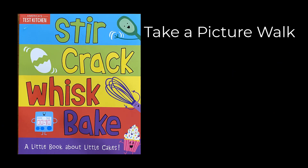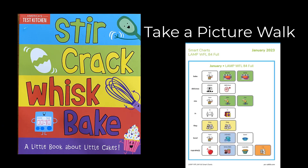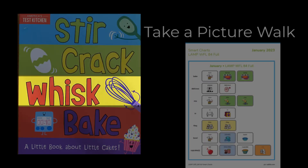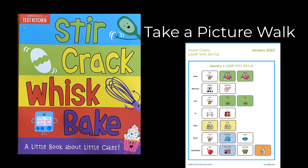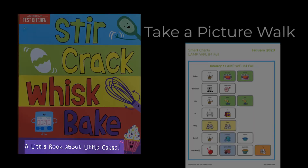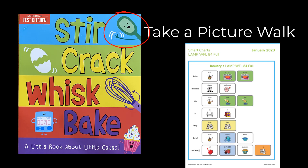You can begin reading by taking a picture walk. This is a great way to build background knowledge and get ready for reading the story. Begin by reading the title. This book is called Stir, Crack, Whisk, Bake — a little book about little cakes. I see a spoon. What do you see? I see a spoon, an egg, a whisk for stirring, a timer, and a cupcake. I think this book is going to be about baking cupcakes.